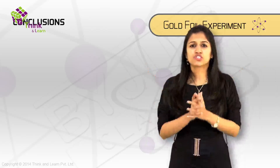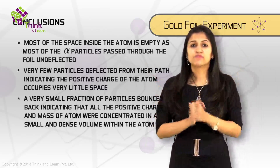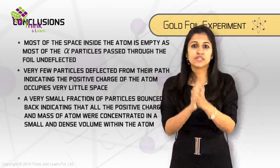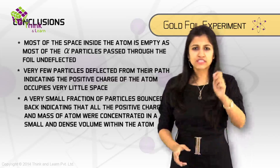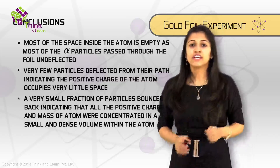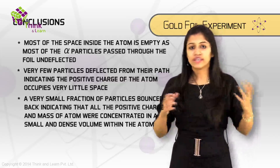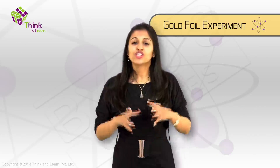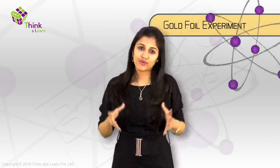When alpha particles are shot towards the gold foil, most of them pass through because they are not hitting the dense material in the atom. And if the alpha particle does hit that dense material, they get repelled by the charge or bounced back. This is exactly how the gold foil experiment changed how scientists think about the nucleus.